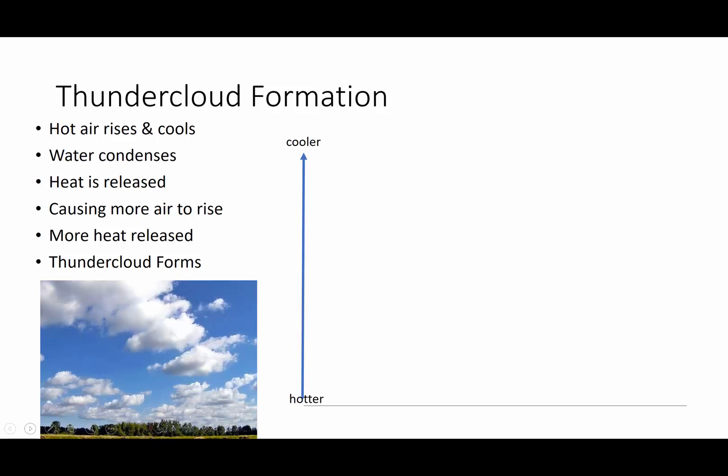Well, vapor is clear and it's non-visible gas, but these are tiny little droplets of liquid water that are surrounding little particles of dust in the atmosphere and are suspended by the buoyancy force of the air around it. So how actually does one of these big thunderclouds get formed?